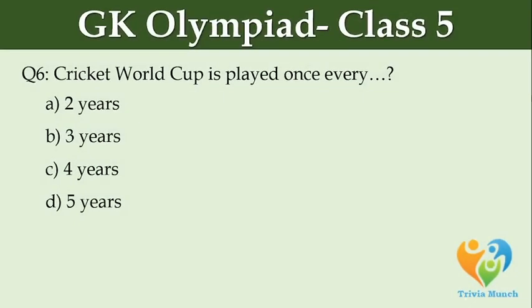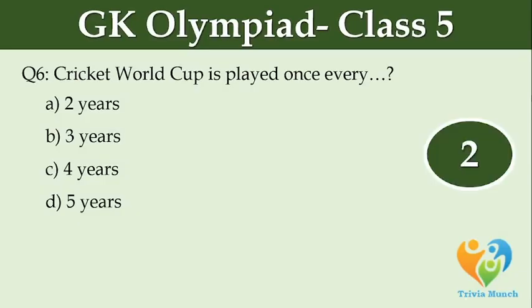The Cricket World Cup is played once every ___. Option A: 2 years. Option B: 3 years. Option C: 4 years. Option D: 5 years.